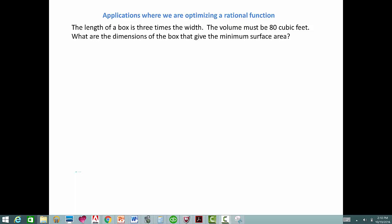This is a fairly complicated application optimization problem where the function we end up with is going to be a rational function. So let's look at it. The length of a box is three times the width. Volume must be 80 cubic feet. What are the dimensions of the box that give the minimum surface area?